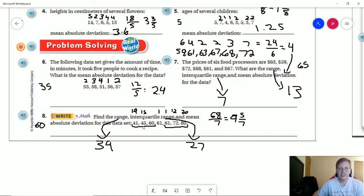Our value for the upper quartile is going to be 72. Our value for the lower quartile is going to be 45. So our interquartile range is going to be 27.